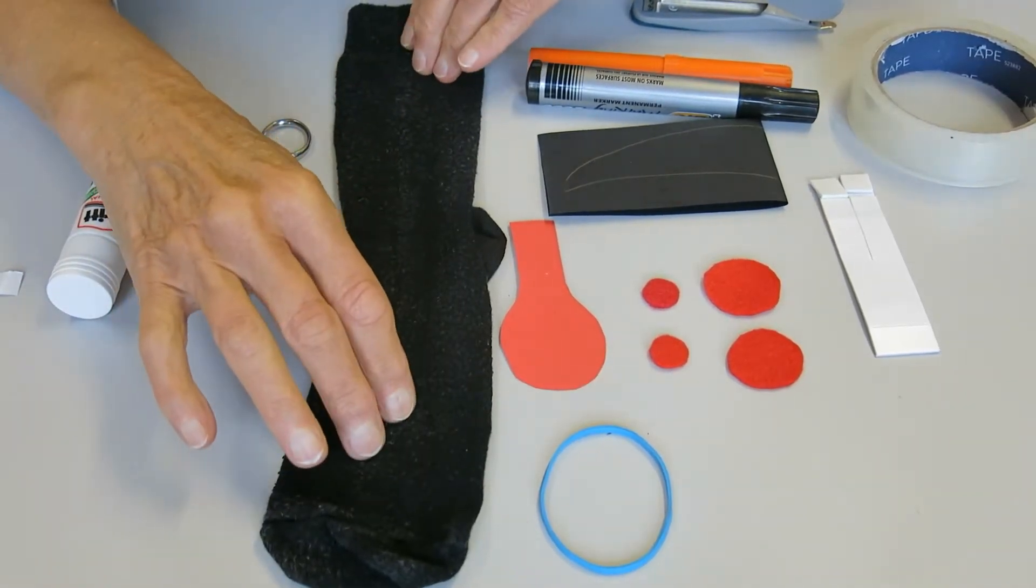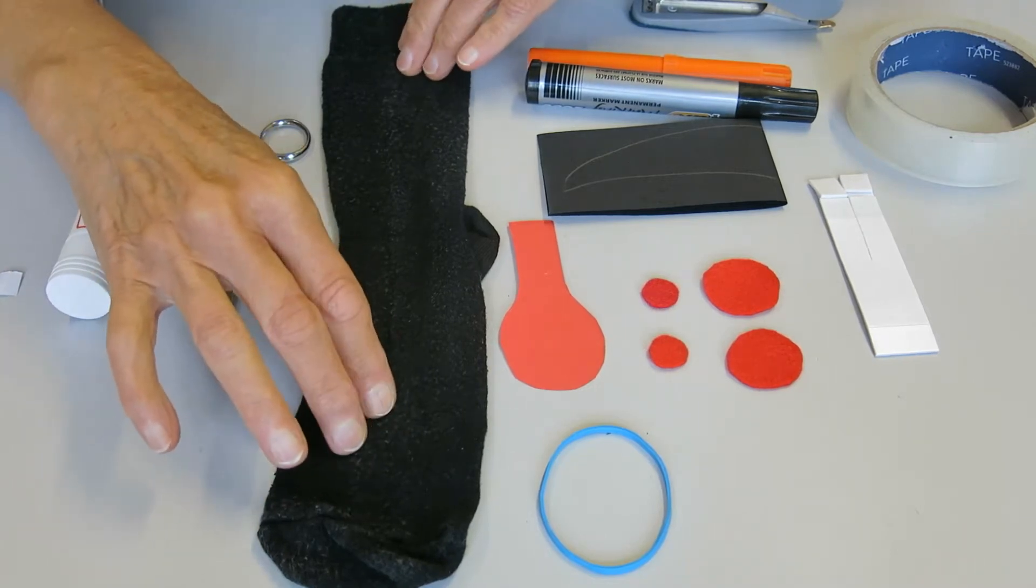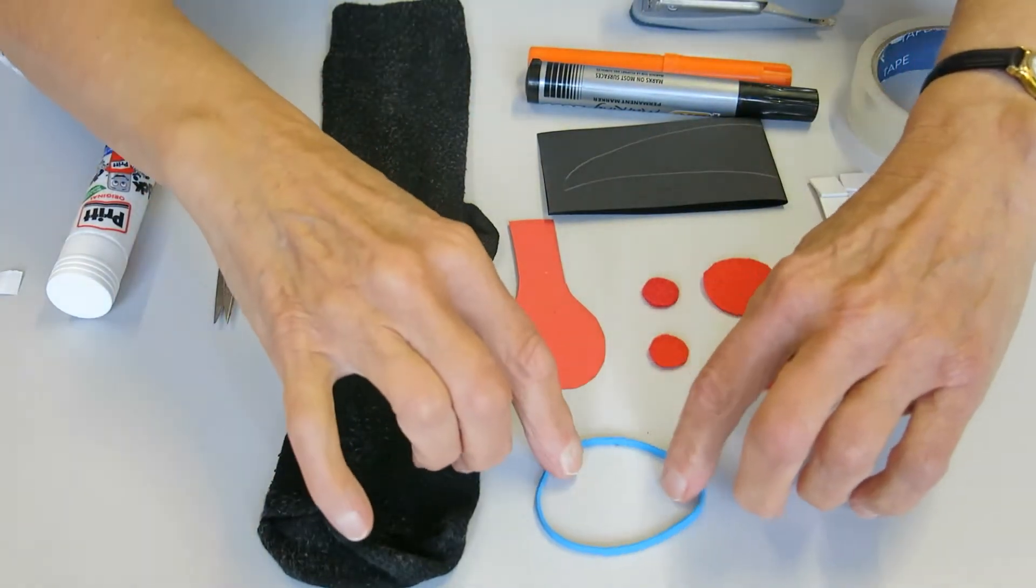We need a sock and it doesn't have to be an old sock this time because you don't spoil the sock at all. You can take him to bits and wear it again afterwards. You need a rubber band.